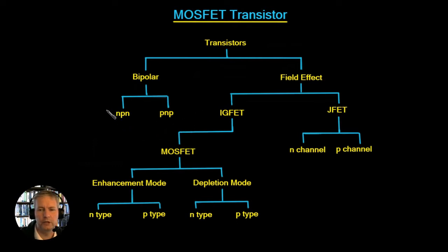Now we're not going to be covering the bipolar transistor in this course but we will mention it now and again. Now the type of transistor we're interested in is the field effect transistor and this can be split into two. It can be split into the IGFET and the JFET.